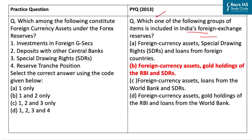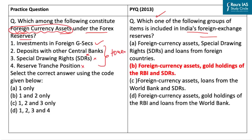The practice question asks: which among the following constitute foreign currency assets under the forex reserve? Option 1 is investment in foreign G-Secs — this is correct. Option 2, deposits with other central banks — this is wrong. Option 3, SDR — also wrong. Option 4, reserve tranche position — also wrong. These three are part of the broader forex reserve but are not part of foreign currency assets.